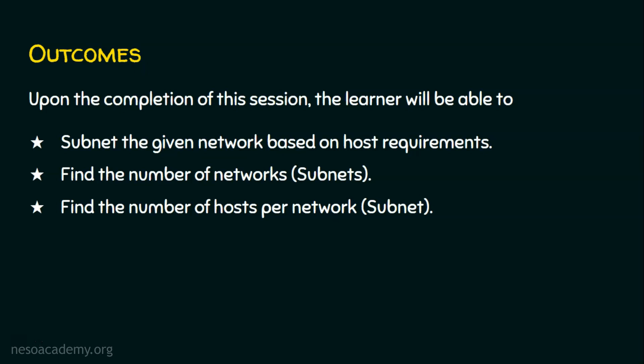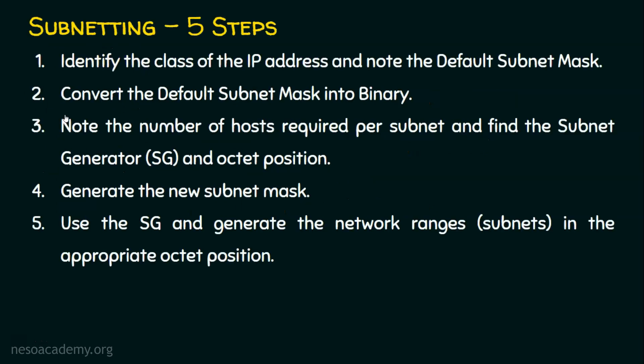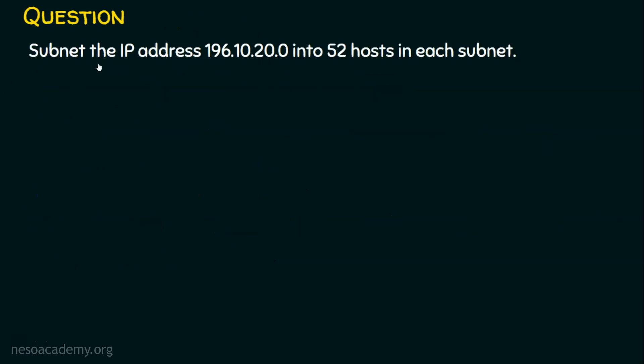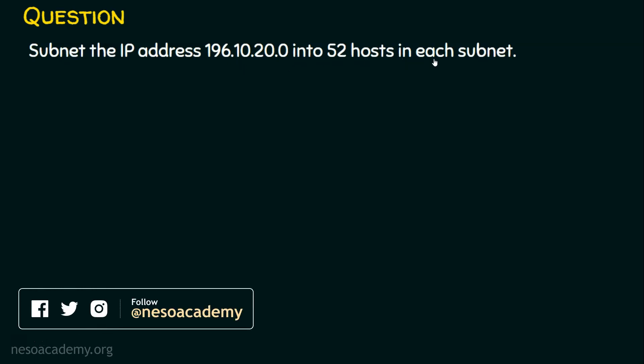Let's revisit the five steps in subnetting. I request you to pause this video and go through these five steps. Now I will directly dive into the question. The question is: subnet the IP address 196.10.20.0 into 52 hosts in each subnet. If you are watching problem number two without watching solved problem number one, please watch that first for better understanding.